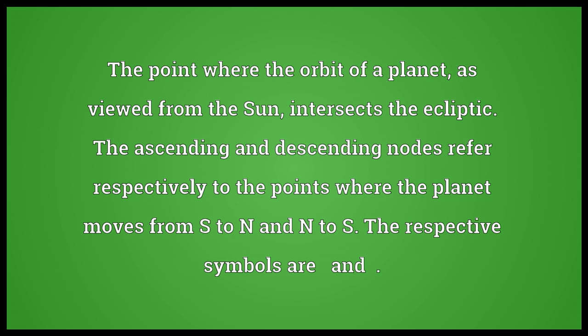The point where the orbit of a planet, as viewed from the sun, intersects the ecliptic. The ascending and descending nodes refer respectively to the points where the planet moves from south to north and north to south.